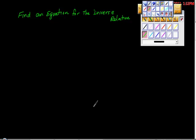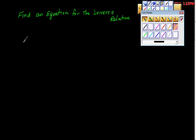Okay, you guys, so let's work on this. Find an equation for the inverse relation. Let's start with a linear one, just to make this easier. So here's our equation. I'm going to put it in f of x form, so we'll put it in function notation form to start with. And it's 3x minus 3 here, isn't it?